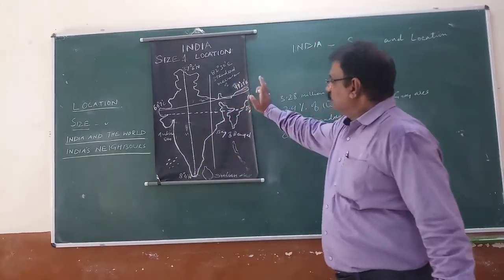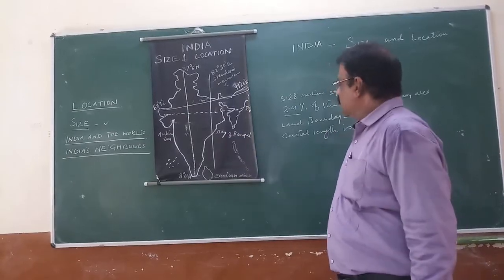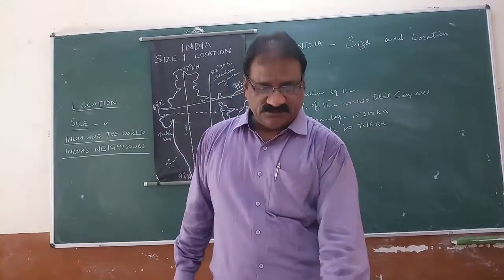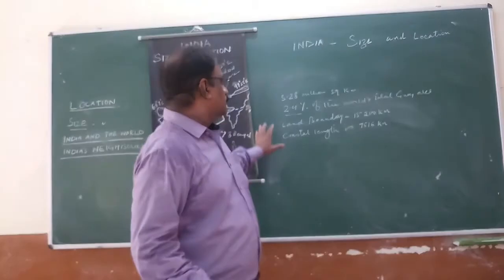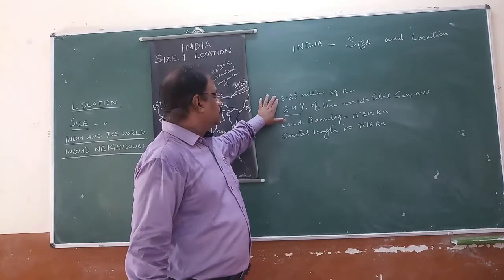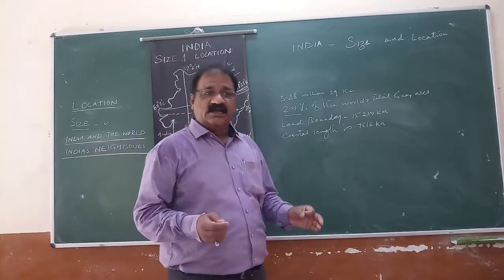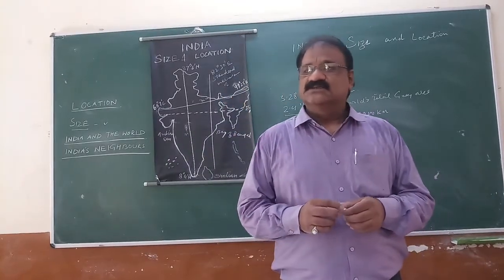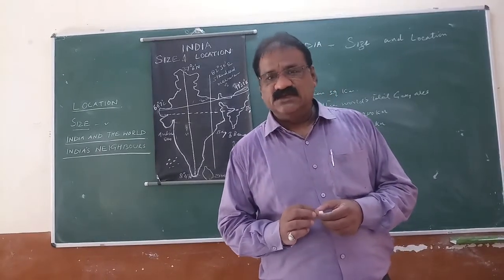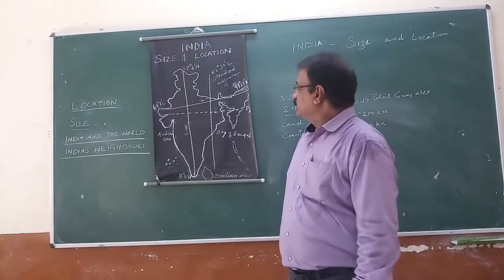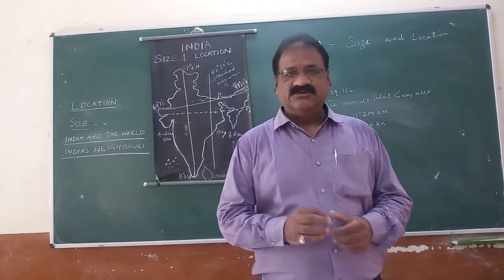This is all about the location, size, India and the world, India's contact with the world, and India's neighbors. To conclude: India is the seventh largest country of the world, with a geographical area of 3.28 million square kilometers, which is 2.4% of the world. India is often called the Indian subcontinent because it has a distinctive identity from the rest of Asia. Hope you have enjoyed this. We will meet again another time. Thank you.